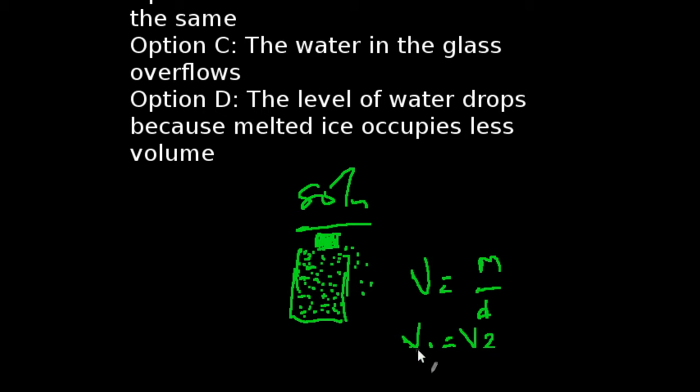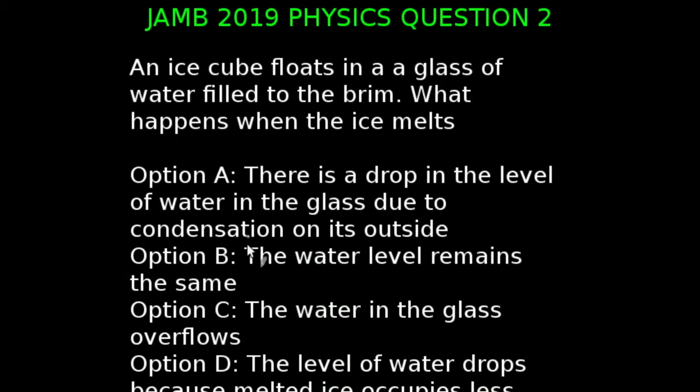So in the second state, when the ice melts, it should produce enough water that is equal in amount to the one that was thrown out or displaced. So basically, the volume of water will remain the same. So the correct answer to that question is option B. The water level remains the same.